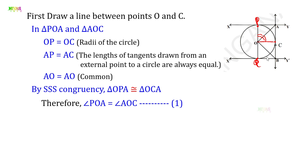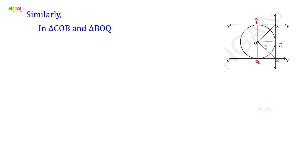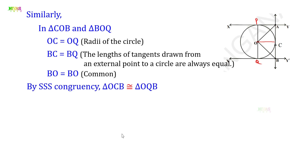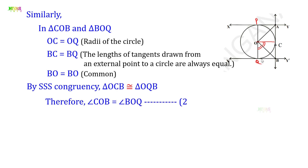Similarly, in triangle COB and triangle BOQ: OC is radius and OQ is radius, so OC is equal to OQ. B is an external point, and BC and BQ are tangents from B to the circle, so BC is equal to BQ. And BO is equal to BO, as it is common. Therefore, triangle OCB is congruent to triangle OQB. Therefore, angle COB is equal to angle BOQ. This is equation two.